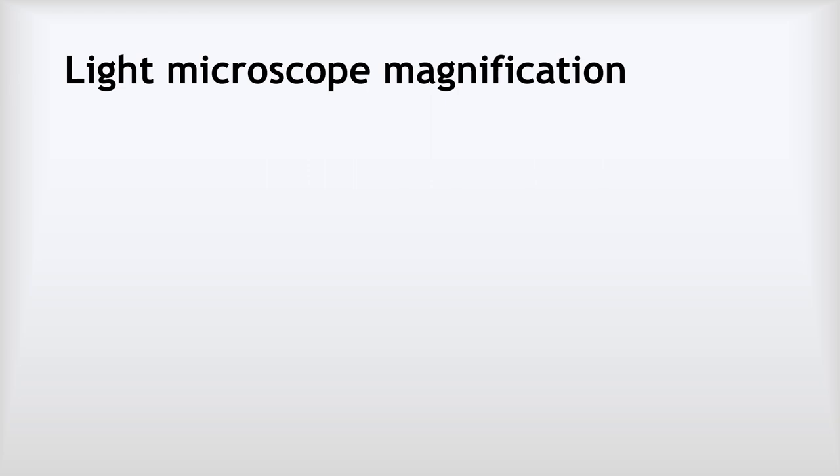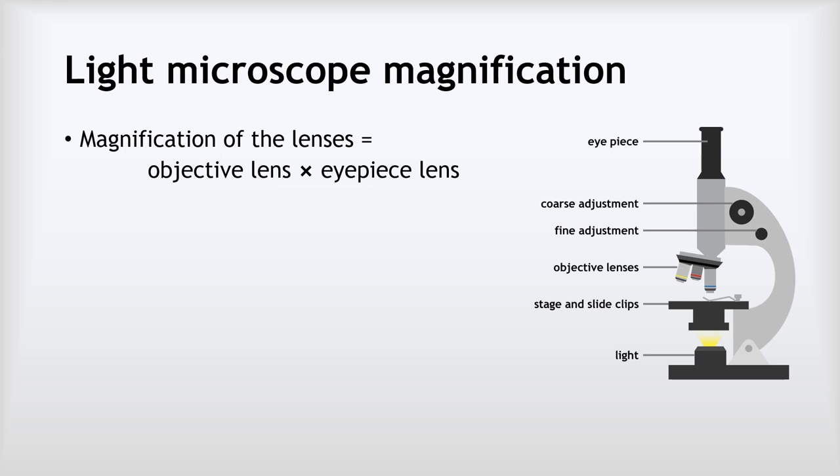The last section of this video looks at a couple of different calculations that we need to do around the magnification of light microscopes. Now the first type of calculation is quite easy, it's just to calculate the magnification based on the choice of lenses that we've used. And the magnification of the lenses is the magnification of the objective lens multiplied by the magnification of the eyepiece lens, and as standard in our secondary school light microscopes our magnification will be multiplied by 10.